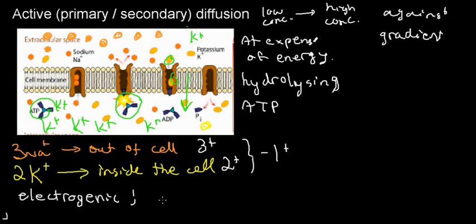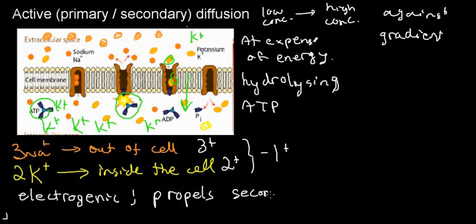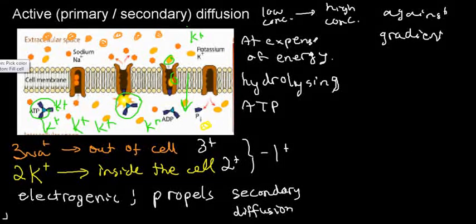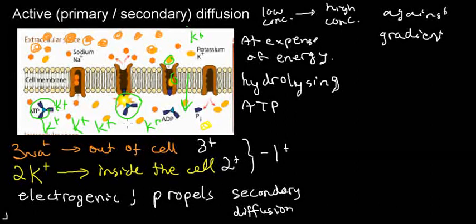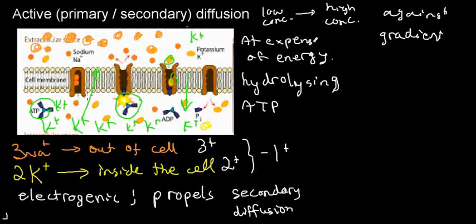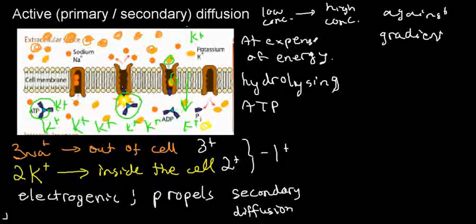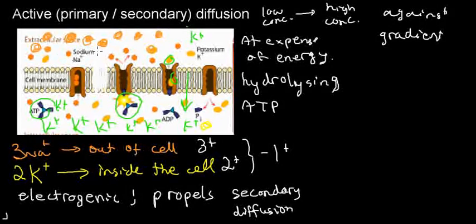The pump also propels the secondary diffusion mechanism by creating chemical gradients — an environment with lots of sodium outside and lots of potassium inside. These ions can't wait to get to the other side, but they can't pass through. You can imagine if the layer broke, all the sodium would rush in and all the potassium would rush out. This mechanism — allowing controlled flow — will be discussed later.